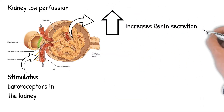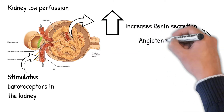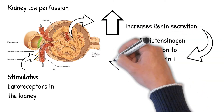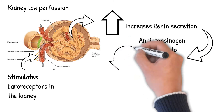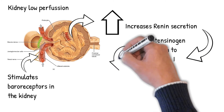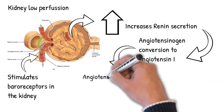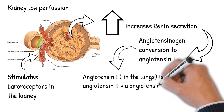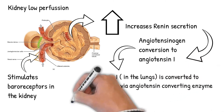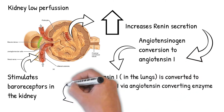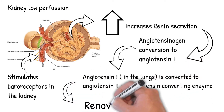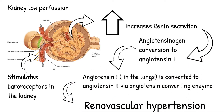This leads to renin secretion that causes the conversion of angiotensinogen to angiotensin 1. Angiotensin 1 then proceeds to the lung, where it is converted to angiotensin 2 via angiotensin converting enzyme, resulting in renovascular hypertension, a secondary type of high blood pressure.